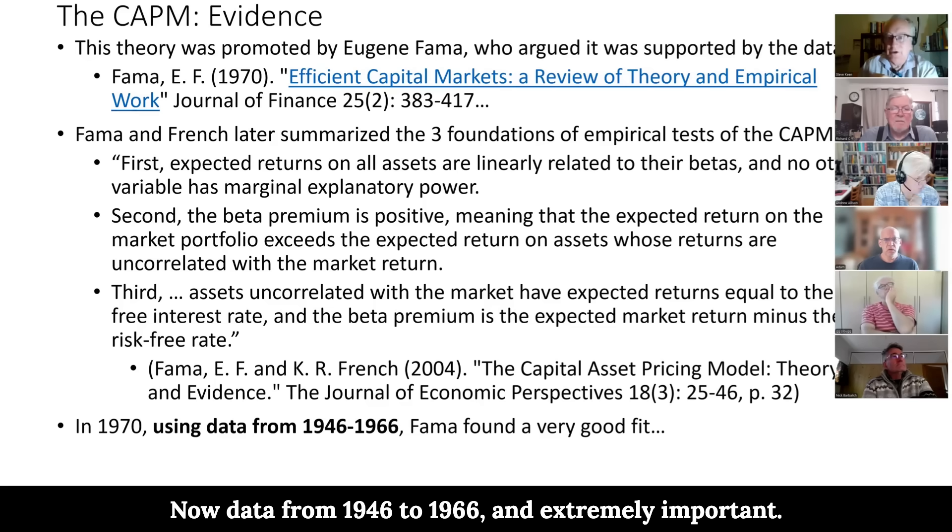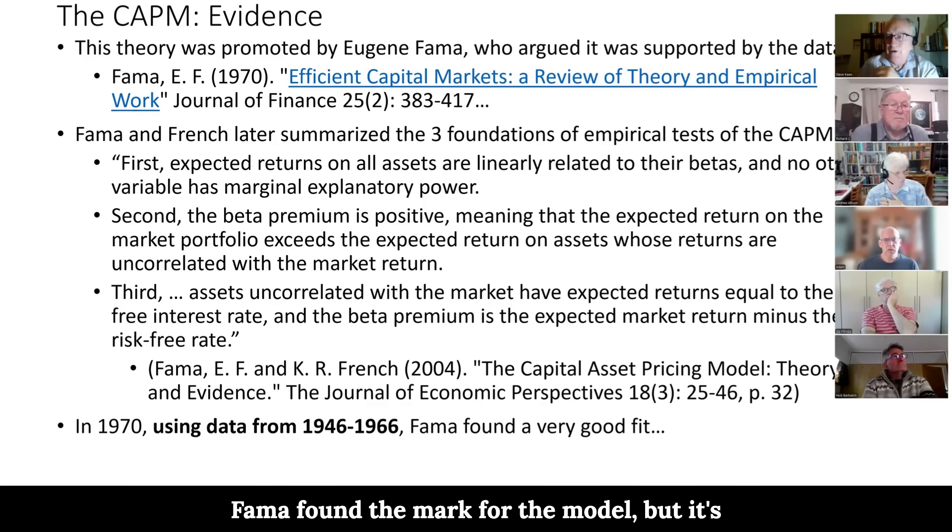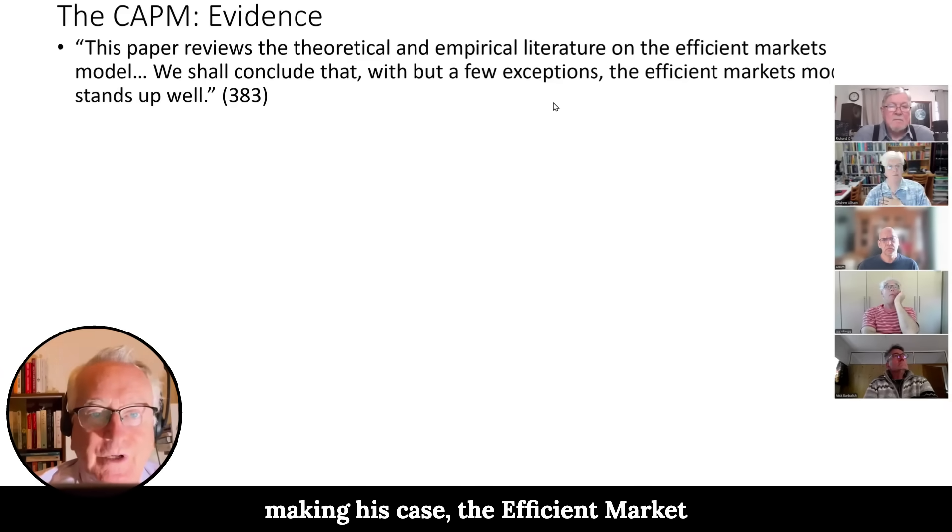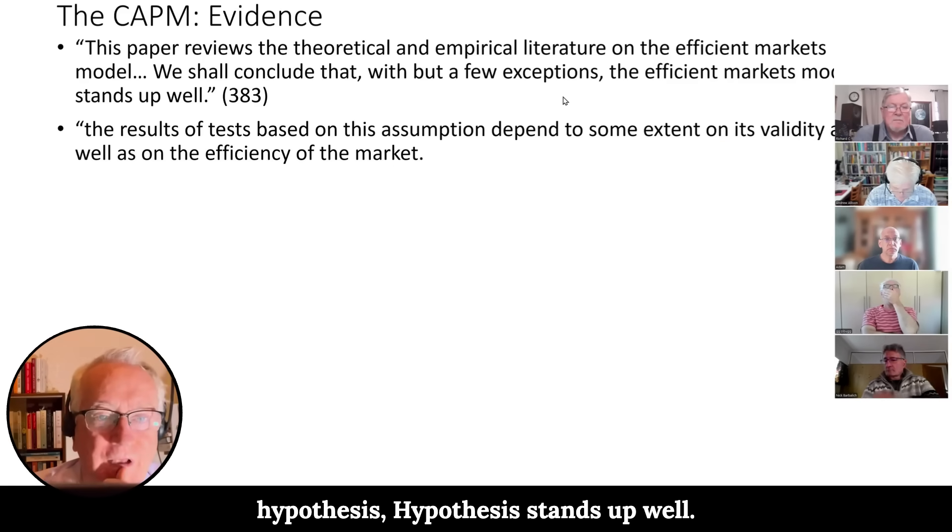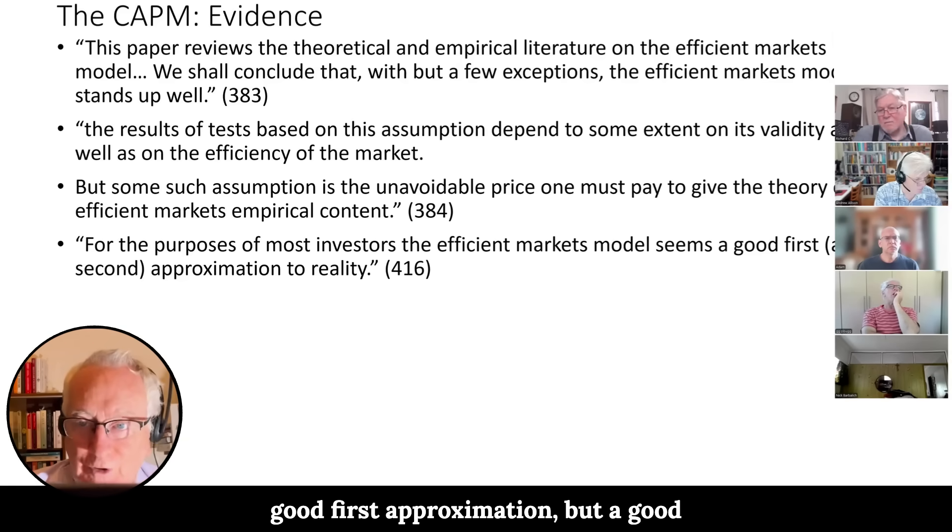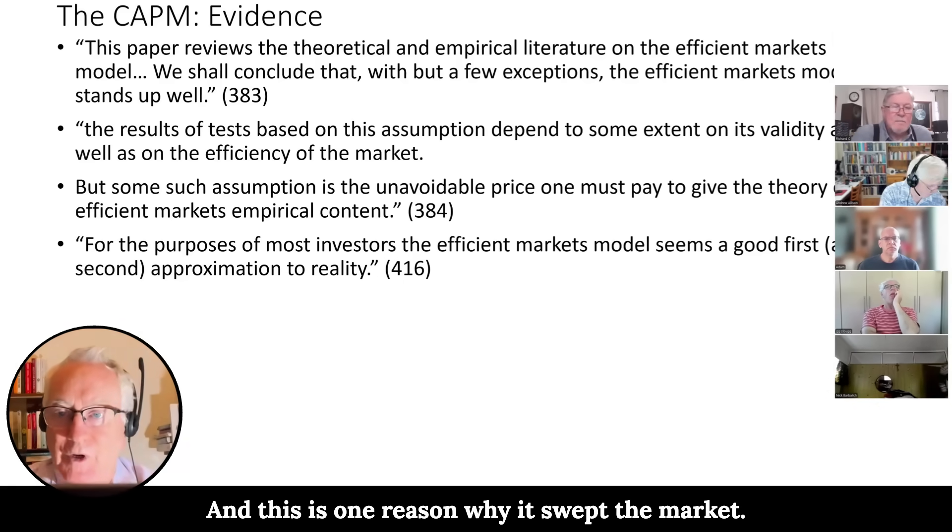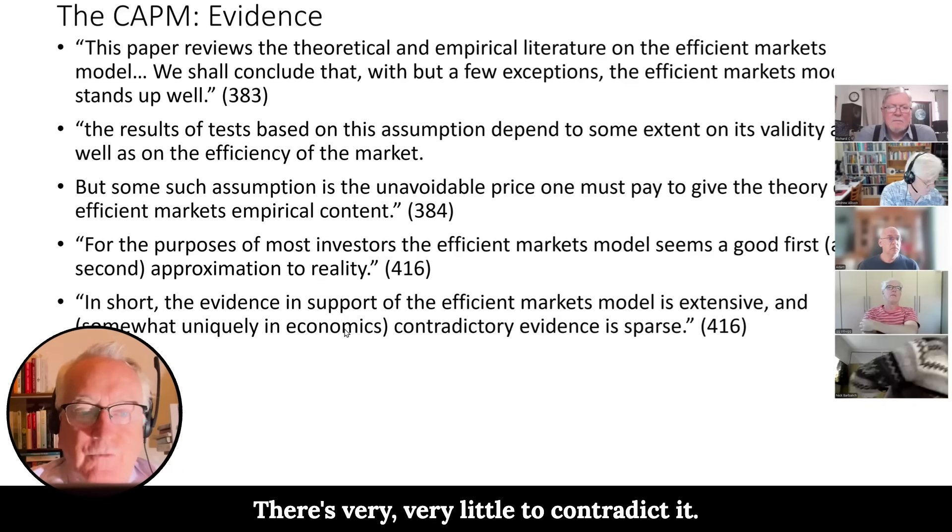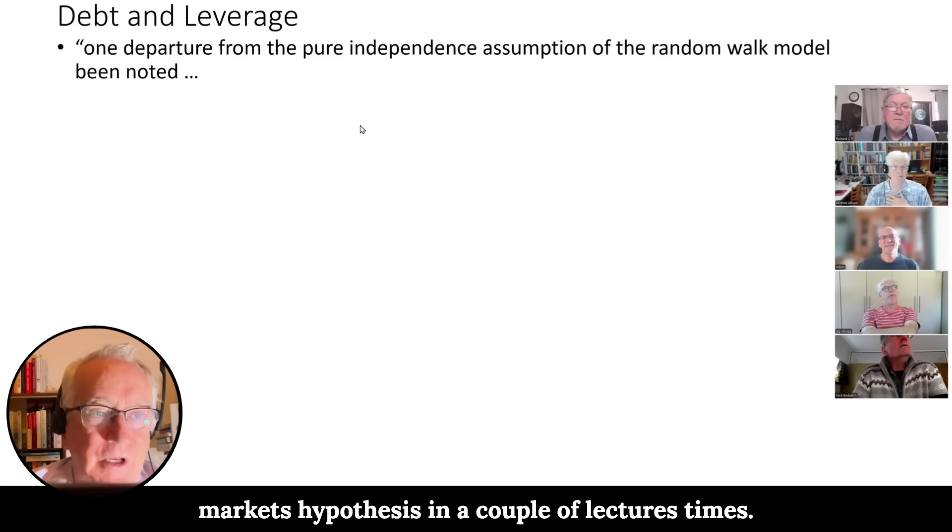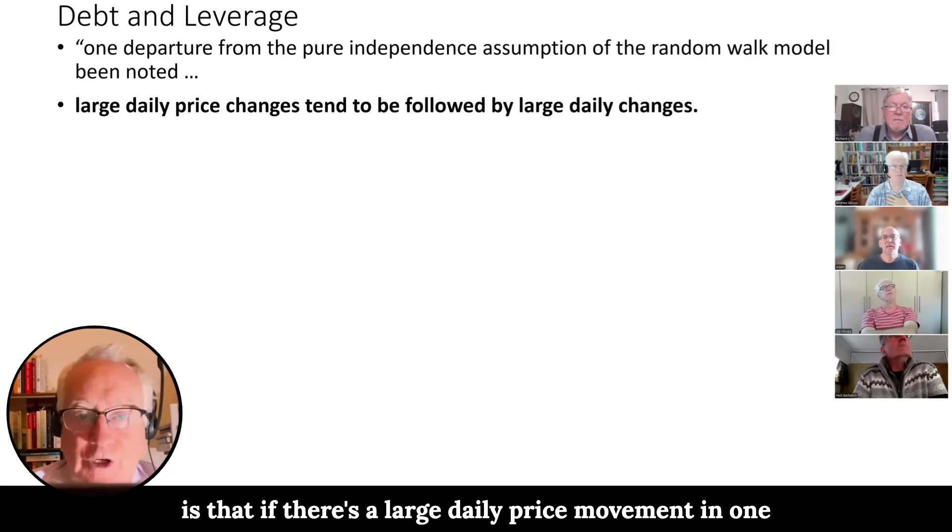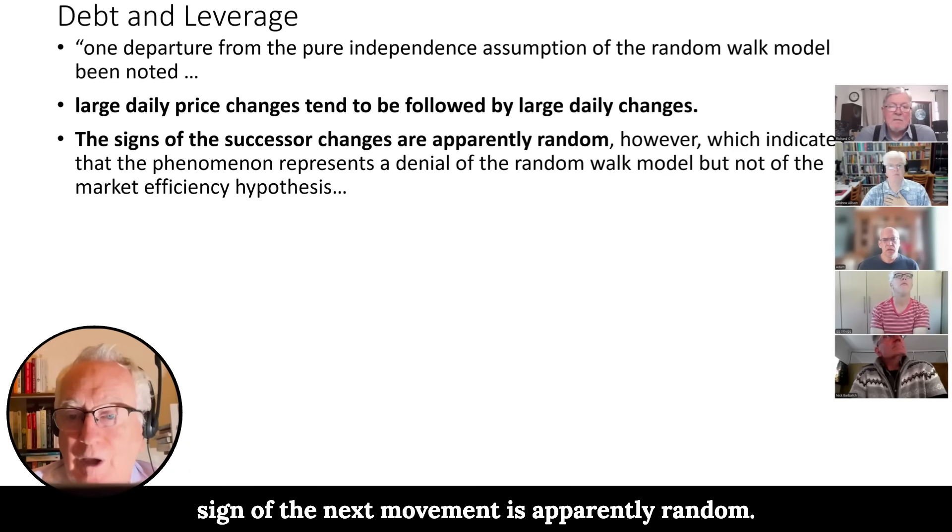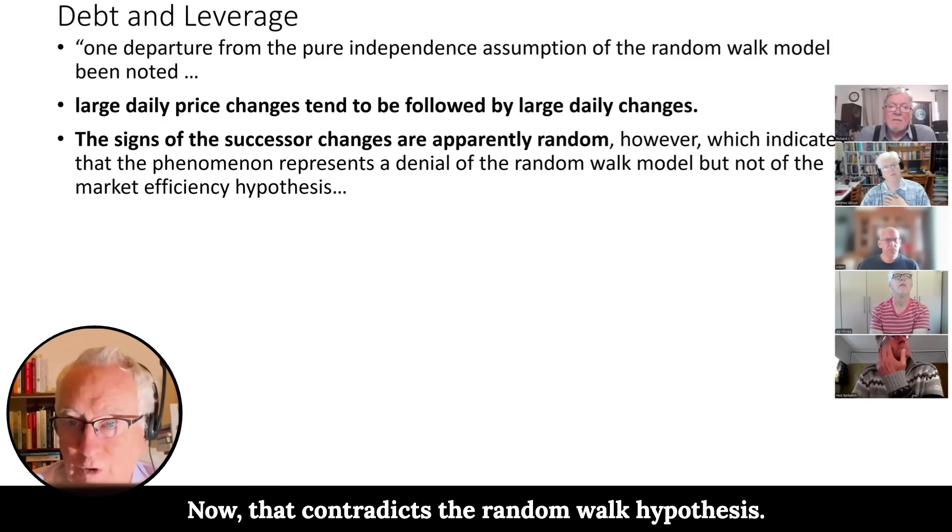Now using data from 1946 to 1966, and those dates are extremely important, Fama found a very good fit for the model. But it's crazy. There's obviously something totally wrong with it. So why did he get that fit? So here he's going through making his case. The efficient market hypothesis stands up well. The results depend to some extent upon the validity of its assumptions, but let's check the data and see how well it does. And he said it seems to be not just a good first approximation but a good second approximation for most investors. And this is one reason why it swept the market at the time. So there's plenty of evidence to support it. There's very, very little evidence to contradict it. He did admit one curious fact, and this will turn up when I start talking about the fractal markets hypothesis in a couple of lectures times. He said one departure from a pure random walk is that if there's large daily price movement in one direction, it's followed by large daily price movements, but the interesting thing is the sign of the next movement is apparently random. So if a big step in the market, the next step is a big one, but that contradicts the random walk hypothesis.